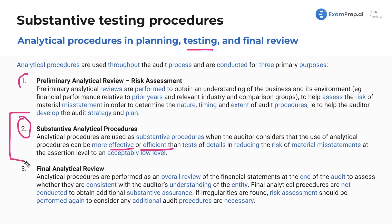It's only during the testing phase that you obtain substantive assurance. When taking the exam, try to think: what phase of the audit am I in? Engagement acceptance, planning, testing, final review, conclusion — understanding the phase can help eliminate many incorrect answers. If irregularities are found, risk assessment should be performed again to consider whether any additional audit procedures are necessary.